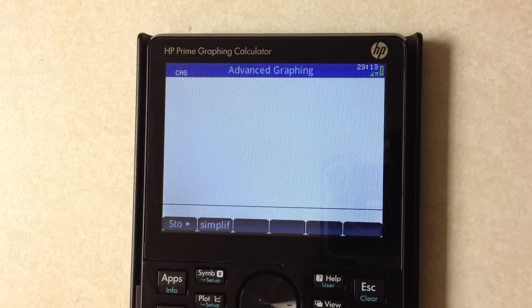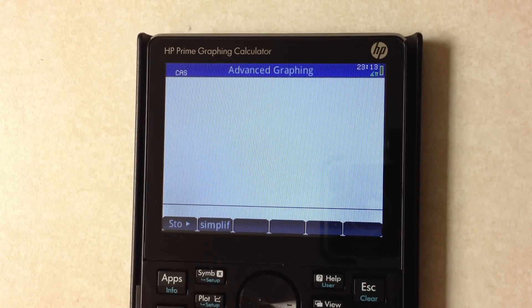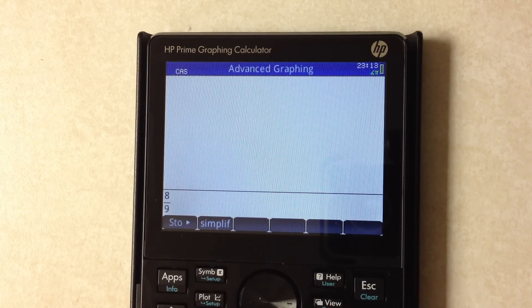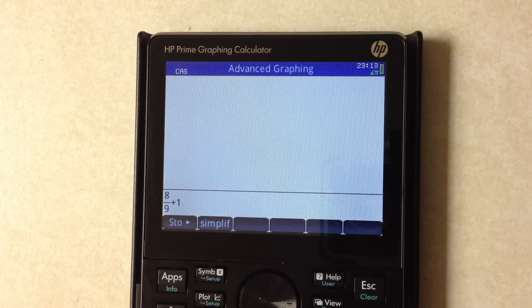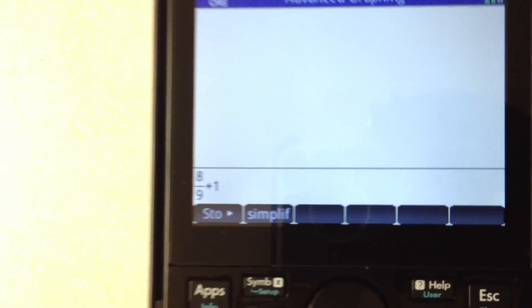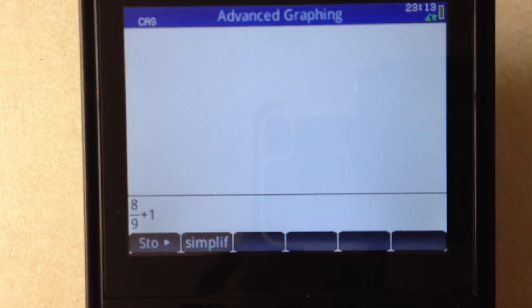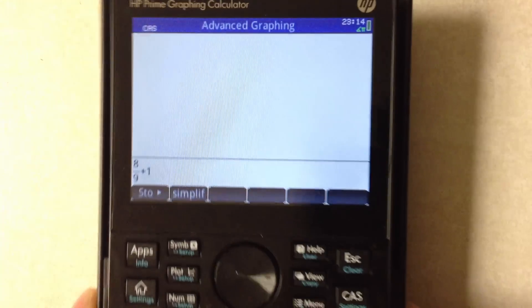So what do we have here? First thing, if I type something like say eight ninths plus one, it looks just like it would if I were to write this on paper by hand. That's the default entry called textbook mode.